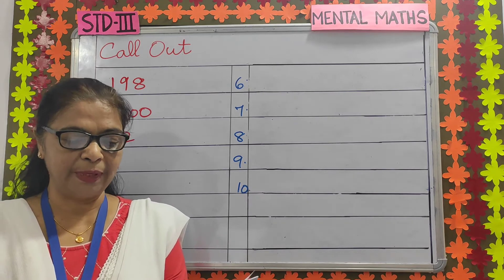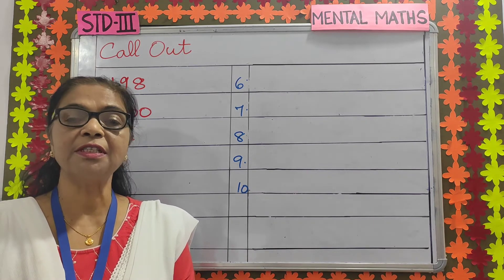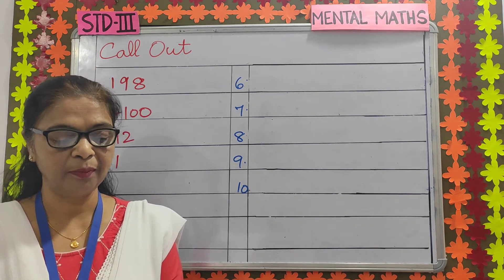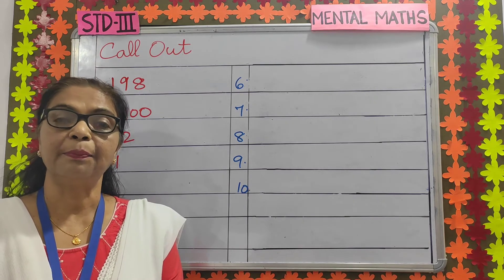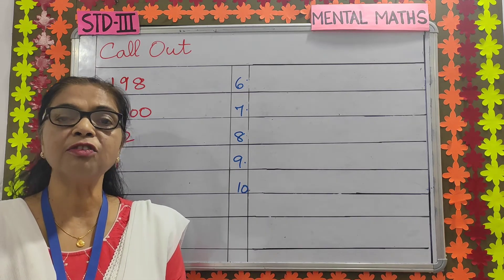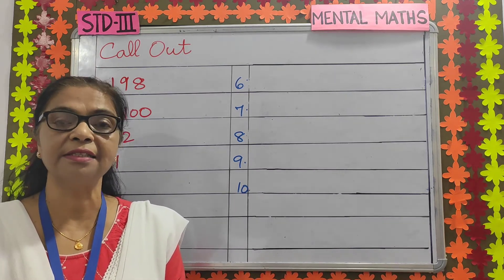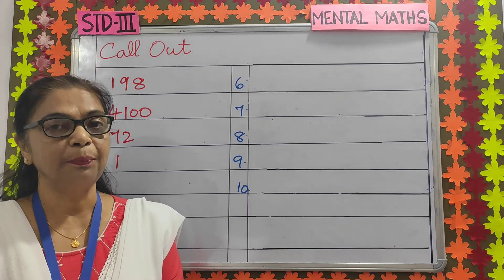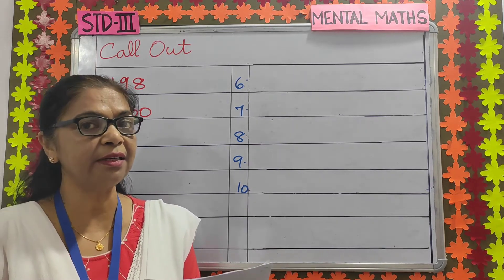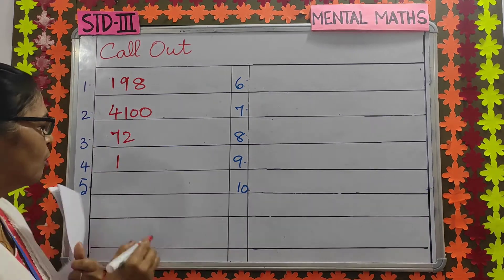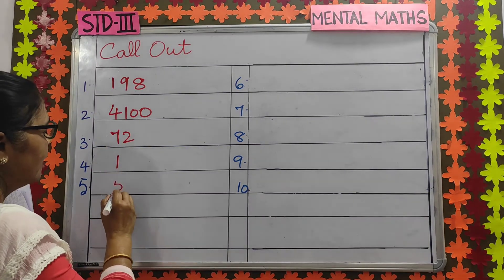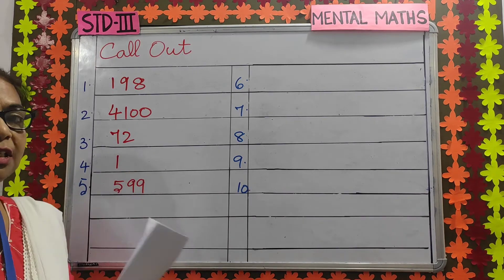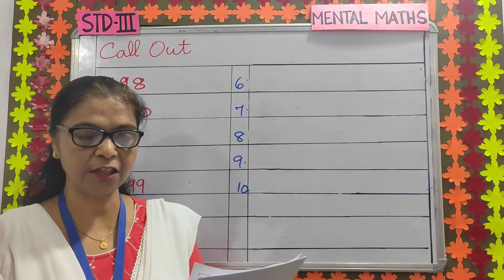Number 5: the predecessor of 60 tens is dash. The predecessor of 60 tens is 599. 60 tens means 600, and 600 minus 1 is 599.